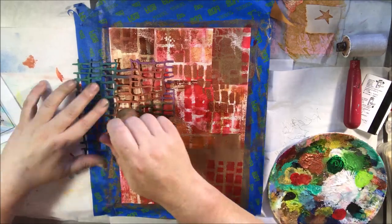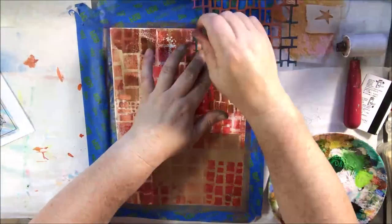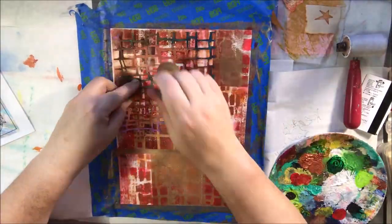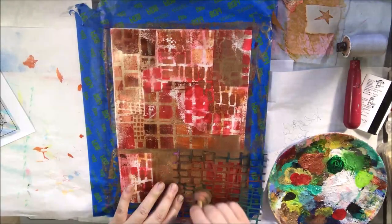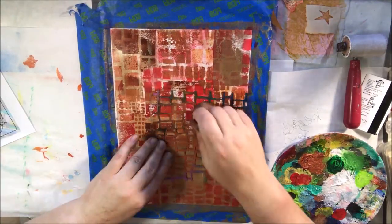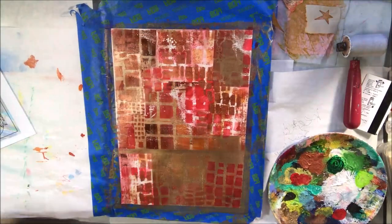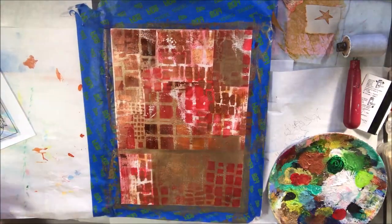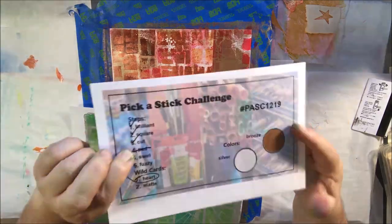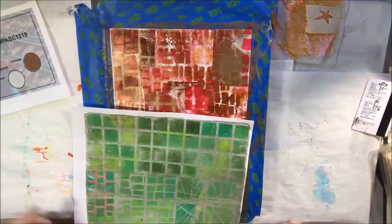This is copper acrylic paint and I'm putting that through the brick and mortar stencil from Stencil Girl. It's a Mary Beth Shaw design, one of my very favorite stencils. I just love this one. It helps everything to come together as a cohesive whole because I have so many different weird things going on there.